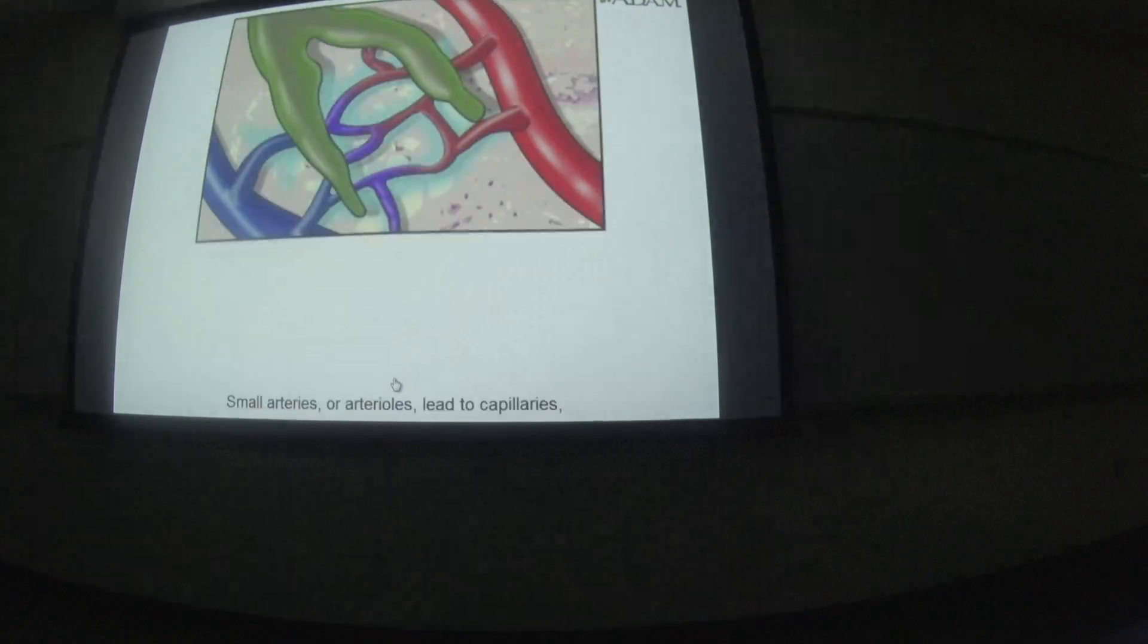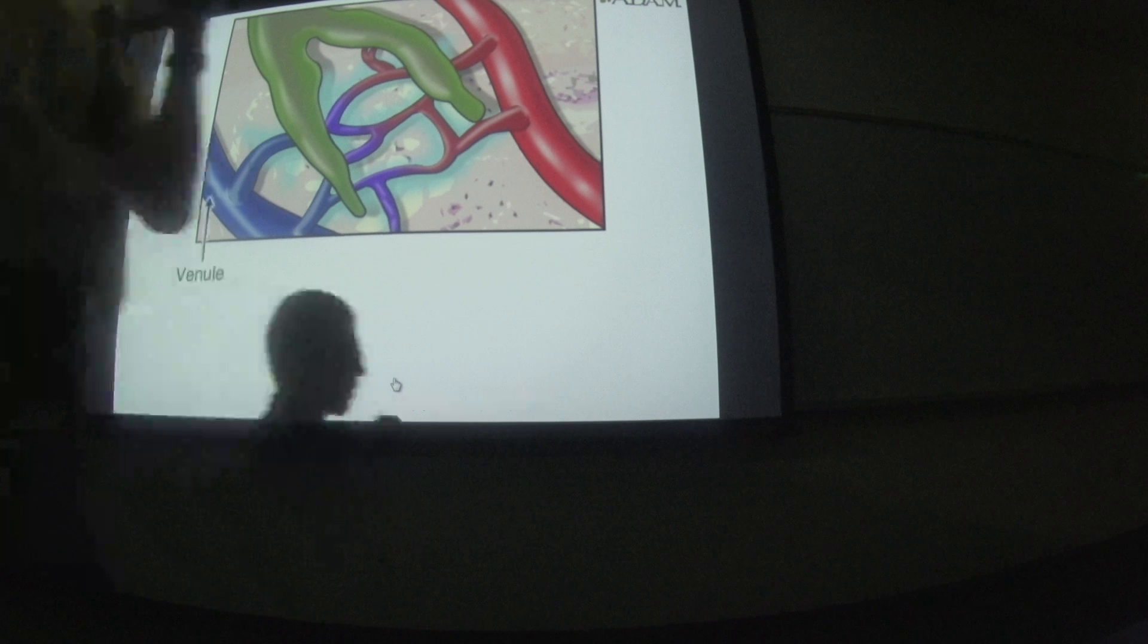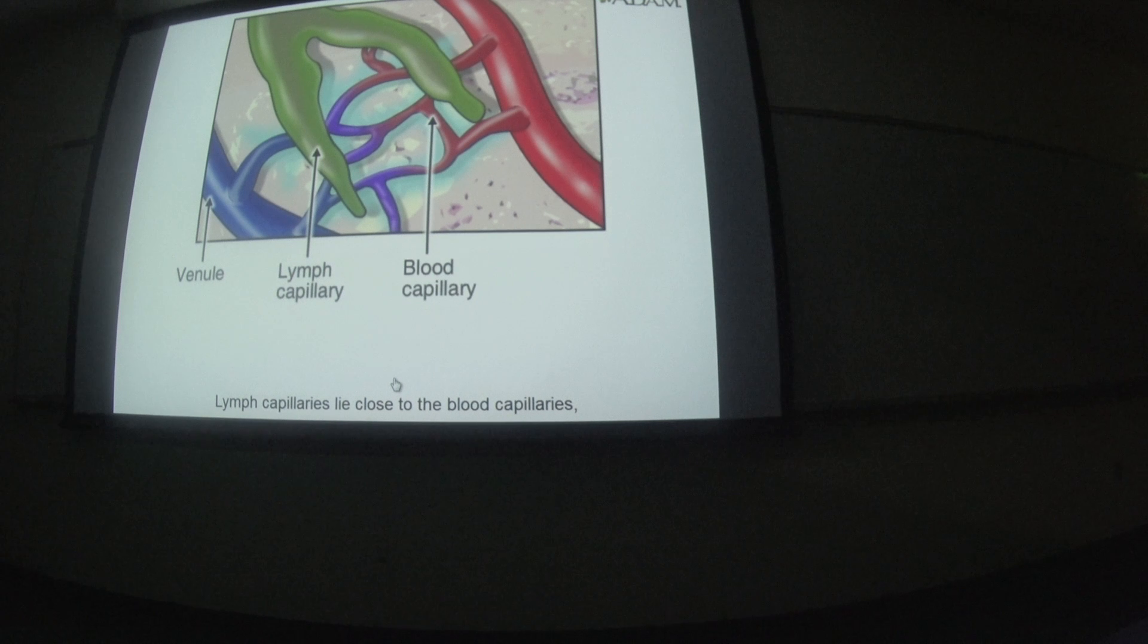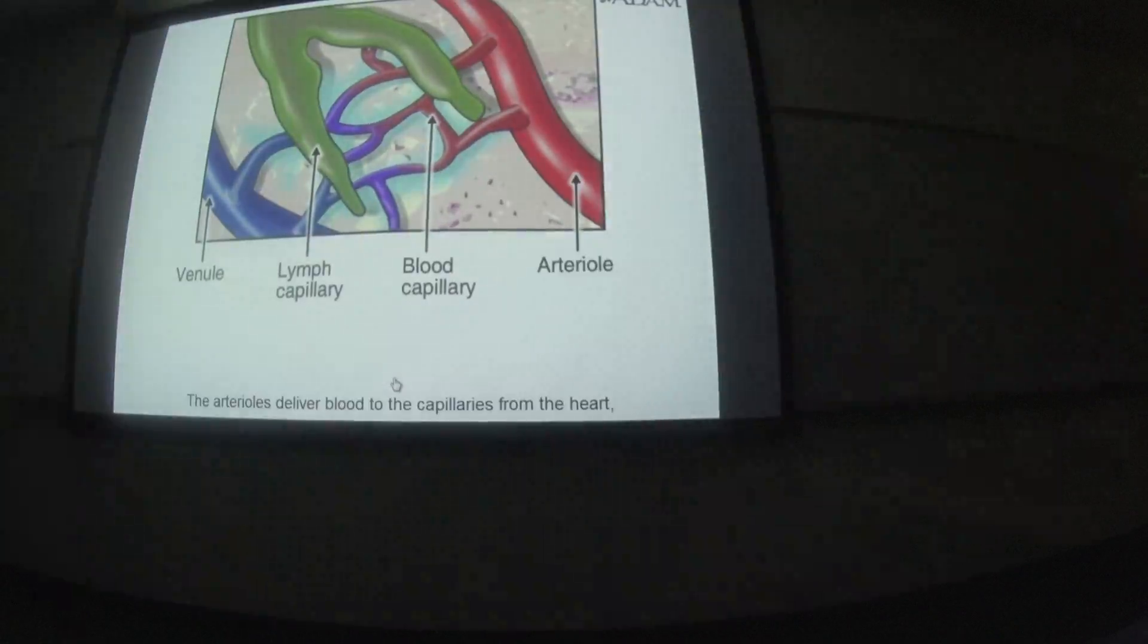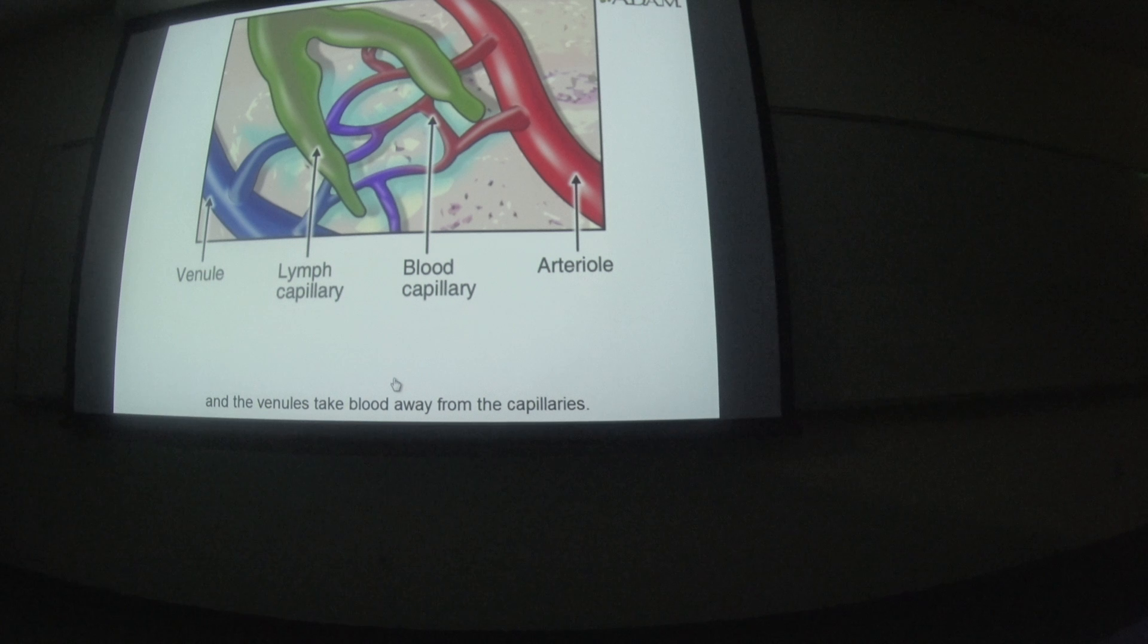Small arteries or arterioles lead to capillaries, which in turn lead to small veins or venules. Lymph capillaries slide close to the blood capillaries but they are not actually connected. The arterioles deliver blood to the capillaries from the heart, and the venules take blood away from the capillaries.